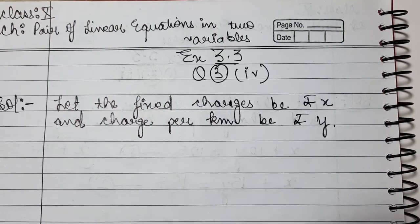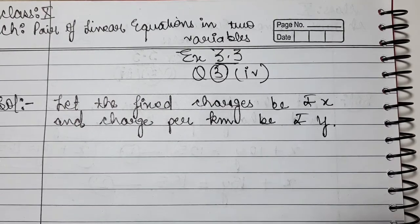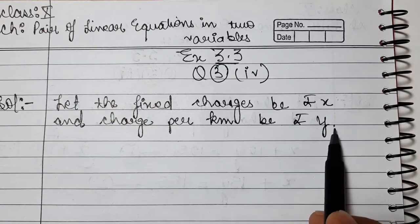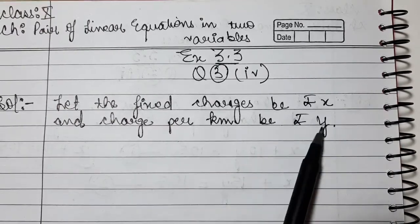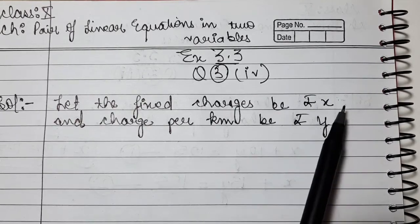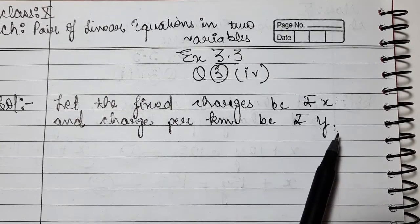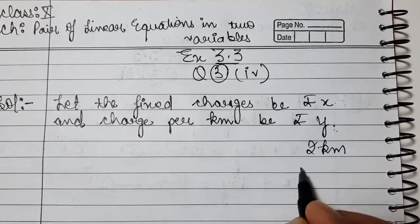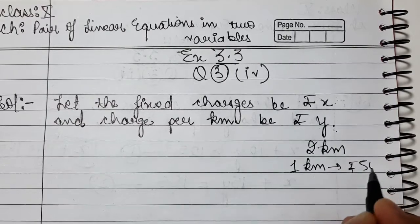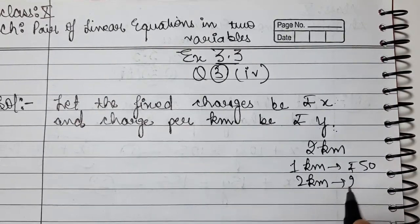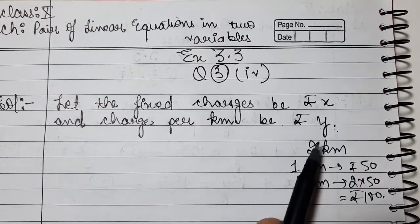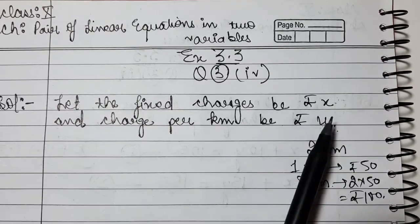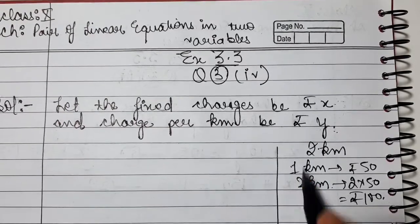The first statement says for 10 km distance covered, Rs. 105 was paid. If 10 km distance is covered, it includes fixed charges plus 10 km charges. Since 1 km costs Rs. y per km, 10 km will be 10 times y. So x plus 10y equals the total amount paid to the taxi driver, which is Rs. 105.